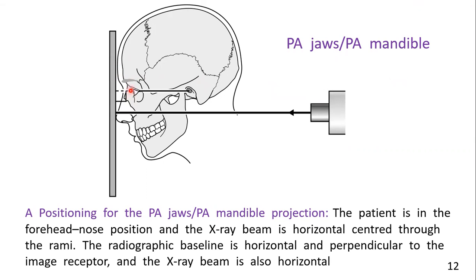Now let's see the position of the patient for PA jaw or PA mandible projection. The patient is in a forehead-nose position and the x-ray beam is horizontal, centered and passing through the rami. The radiographic baseline is horizontal and perpendicular to the image receptor.